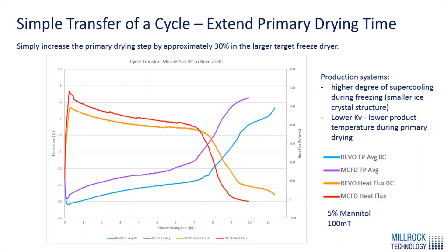Here we have a cycle dried in a MicroFD at 100 mTorr and 0°C for 5% mannitol, shown in the red line with corresponding product temperature in purple. That same recipe was run in a REVO lab-scale unit at 0°C, shown by the orange heat flux line and light blue product temperature. The REVO is drying at a slower rate with a lower heat flux and lower sublimation rate, taking about 30% longer to run. A safe way to transfer is to use the same cycle conditions and extend the primary drying time.